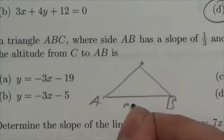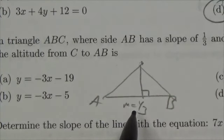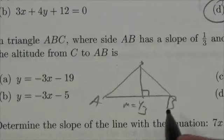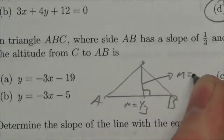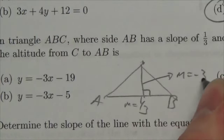a slope of 1/3. Remember, the altitude is the line perpendicular to it. So the slope of this line is going to be - take the negative, change the sign, make it the reciprocal - so negative 3.